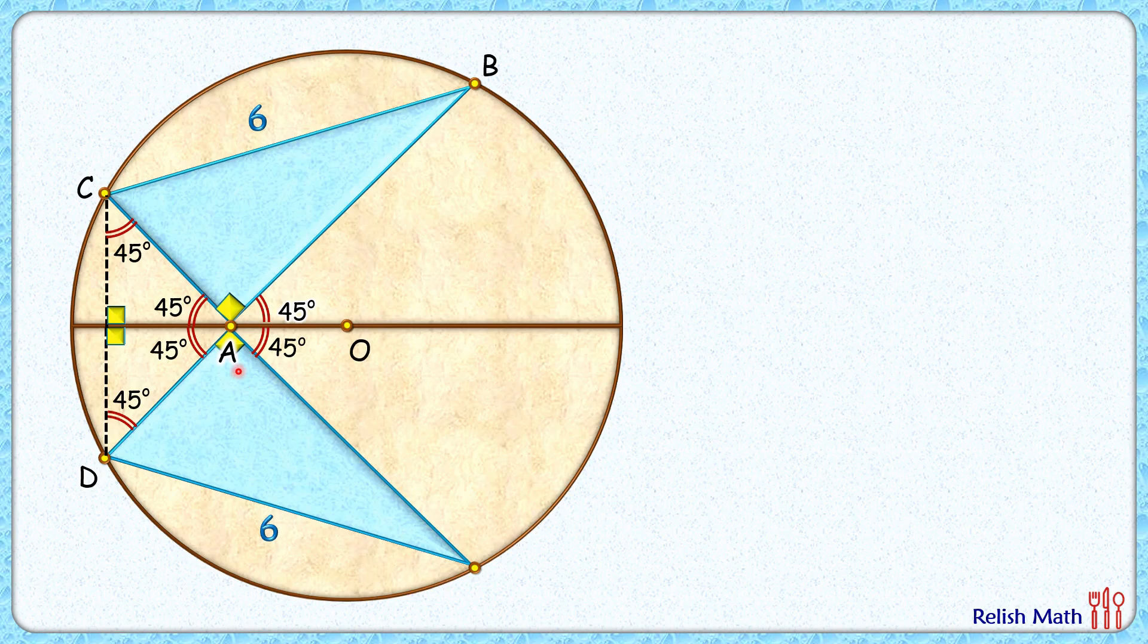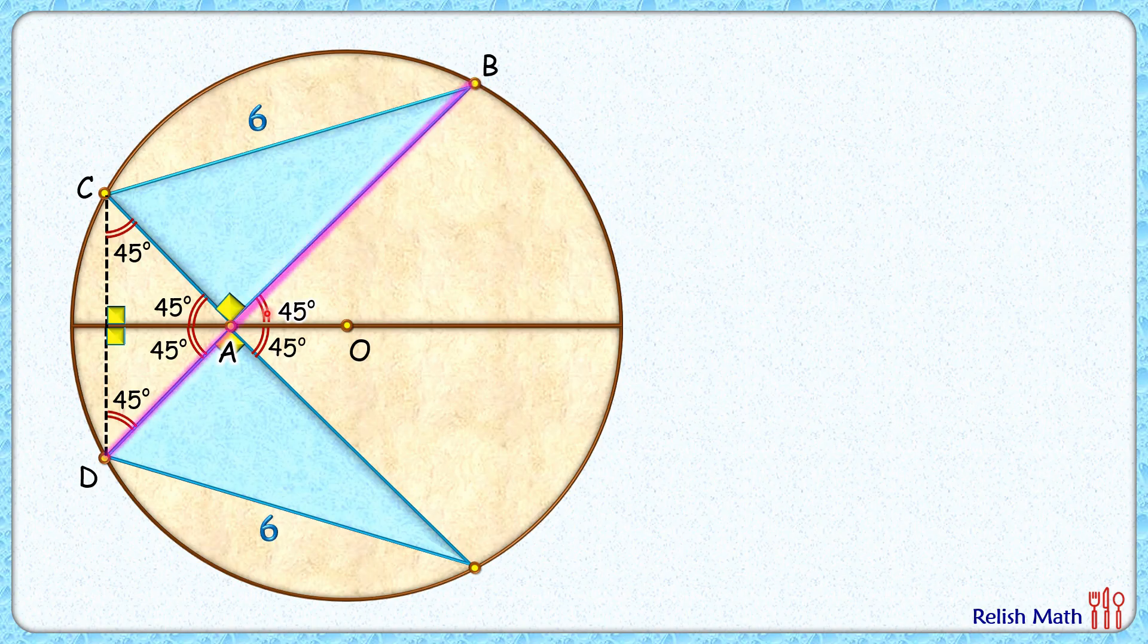Now if you'll observe at point A along this line BAD the angle sum is 180 degrees, so we can say that BAD will be a straight line.